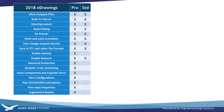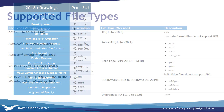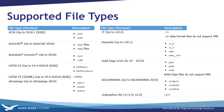eDrawings has always been divided into two packages: eDrawings Standard, or the Free Viewer, which you can download from eDrawingsViewer.com. This allows anyone on Windows or Macintosh to open up SOLIDWORKS part files and assemblies, as well as a whole other slew of file types. This has continued to be enhanced, so now you can open STEP and IGES files as well as many other CAD formats.